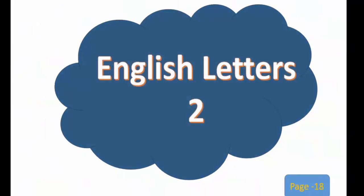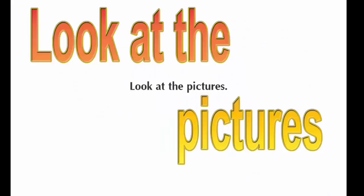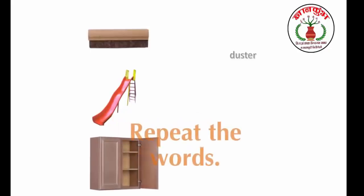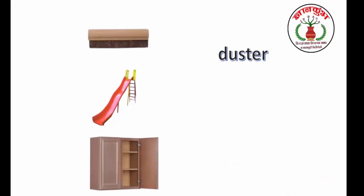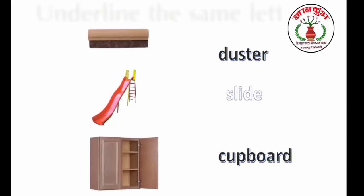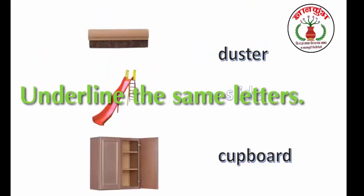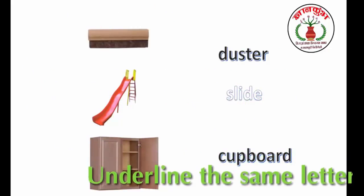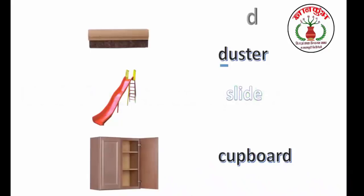English letters 2, page number 18. Look at the pictures. Repeat the words: duster, slide, cupboard. Underline the same letters. D, D, D, D, D.